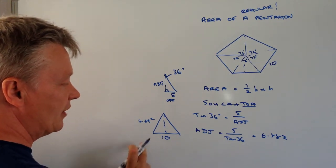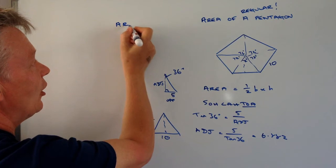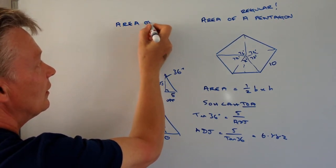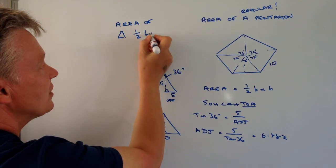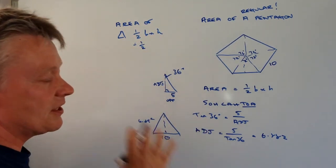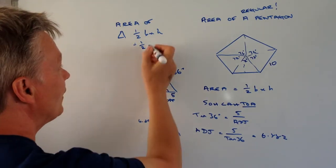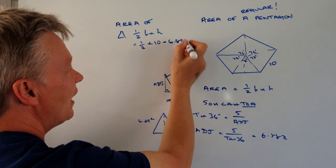Well, if I use my calculator then to figure that out, I can just write it up here. So the area of a triangle is going to be a half base times height. Well, that's going to be a half and the base is going to be 10 times 10 and the height is going to be 6.882.